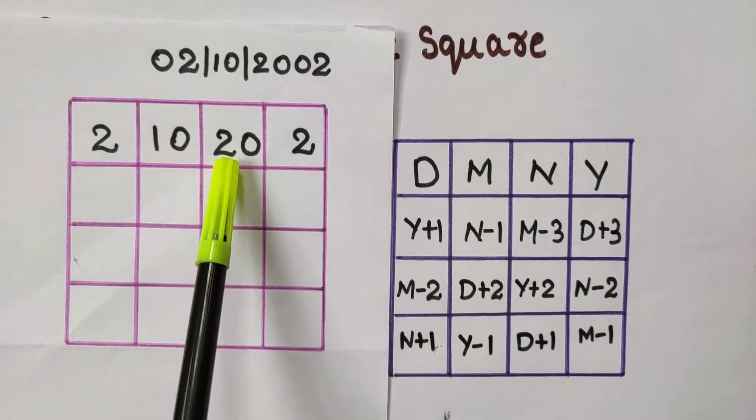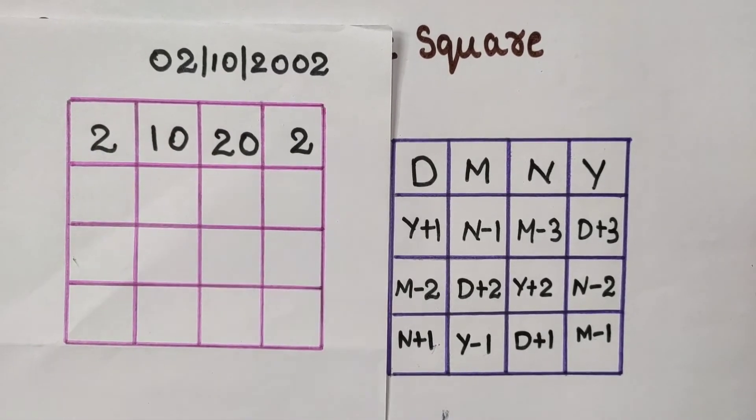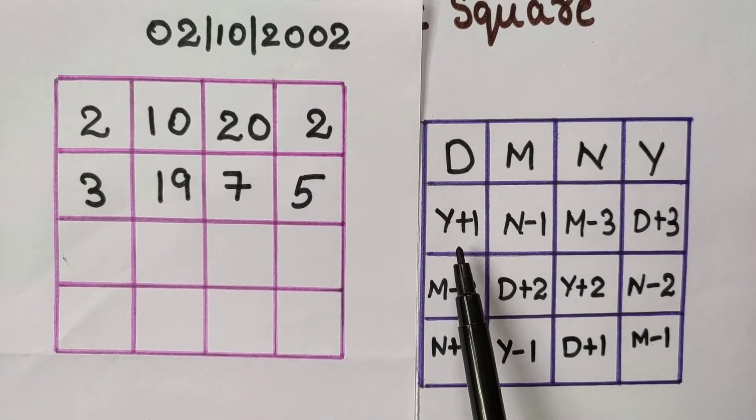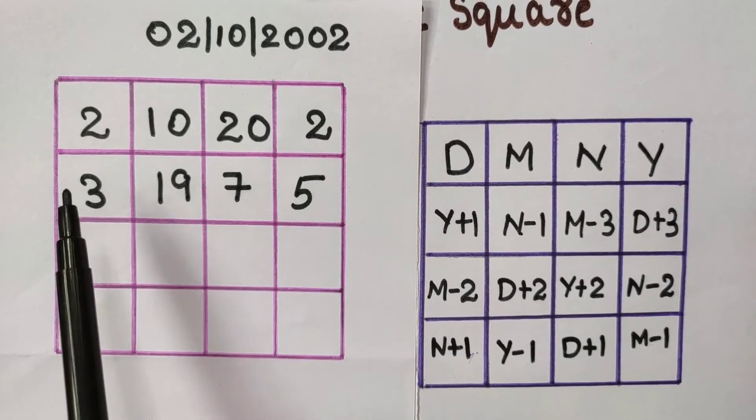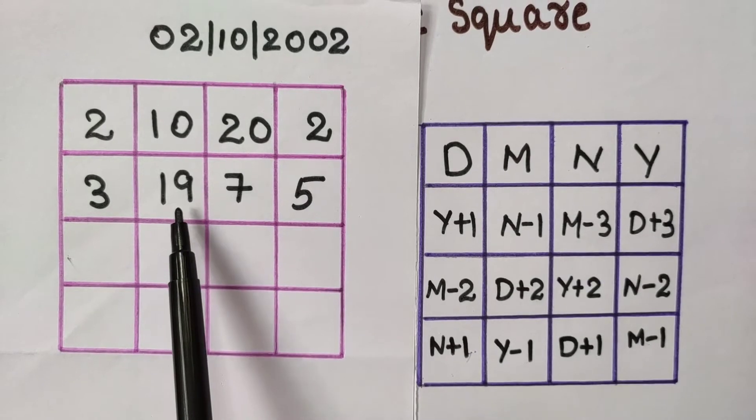Substitute it in these boxes. Thus we get the first row. Y+1, that is 2+1 is 3. N-1, that is 20-1 is 19.